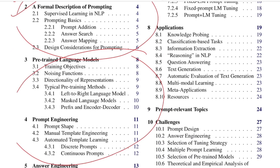For this video we'll go through topics 3 and 4. We'll learn about what pre-trained language models are and the role they play in prompt engineering. In the fourth section, we'll talk about prompt engineering — how to come up with templates, whether it's totally manual or can be automated. If you haven't watched the previous video, I recommend watching that first. The link is in the i-button as well as in the description.